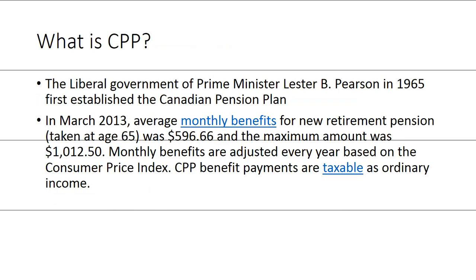When was it created? 1965. Who created it? The Liberal government under Lester B. Pearson. In 2013, almost $600 was taken out on average by people, with a maximum amount of $1,000. Now, CPP was set up to be supplemental retirement income. There are many other options out there — tax-free savings accounts, RRSPs, home equity — it's not supposed to be the sole source of income.